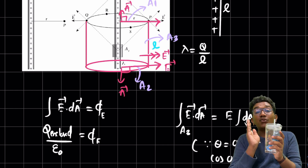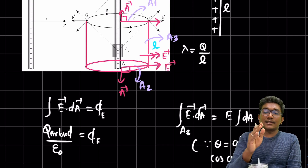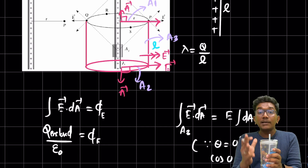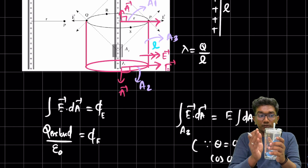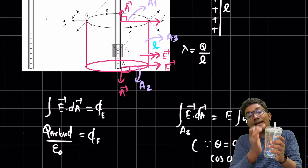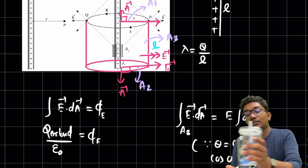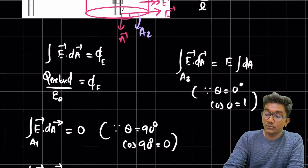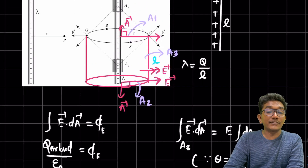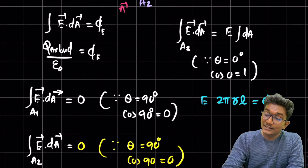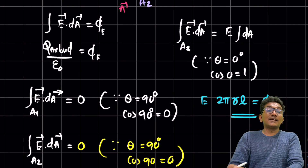Be careful here — many students mistakenly use πr²h, but that is the volume of a cylinder, not the area. The curved surface area of the cylinder is 2πr times h, which here equals 2πrL (where L is the length of the wire). So the integral of E dot dA for A3 equals E times 2πrL, and since the other two flux contributions are zero, this is the net electric flux.